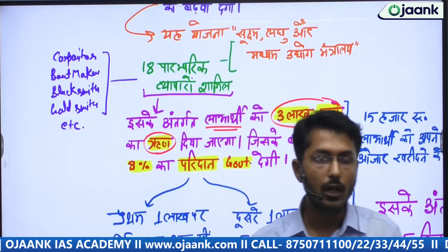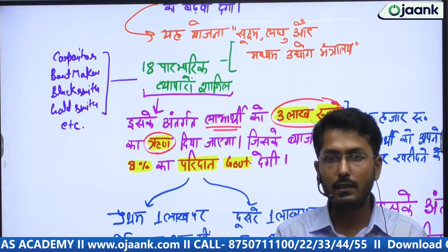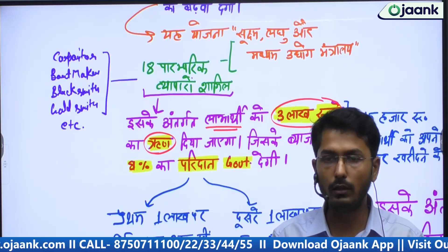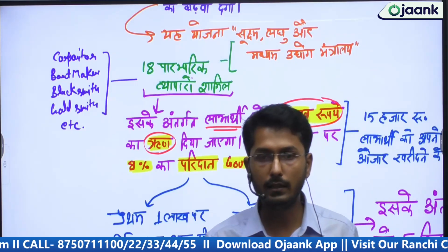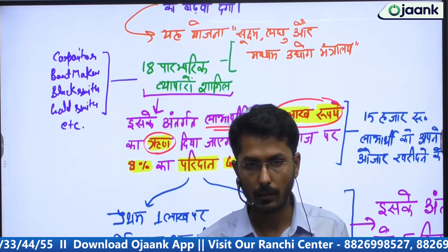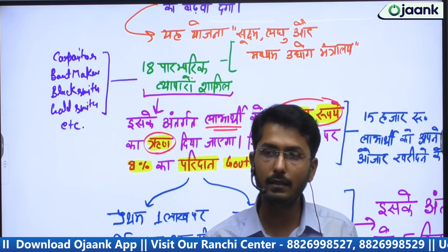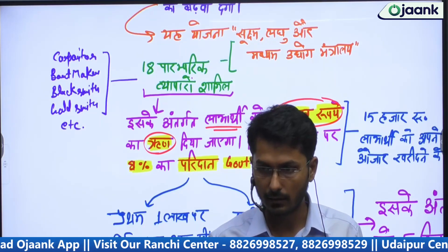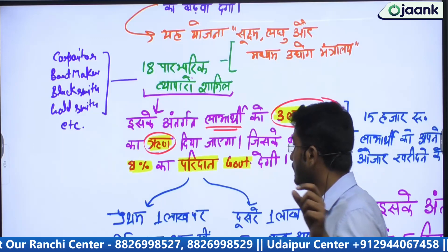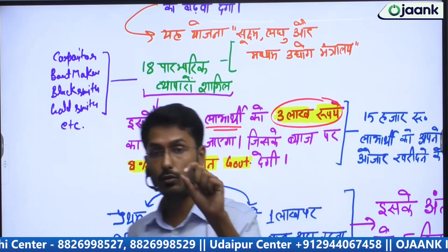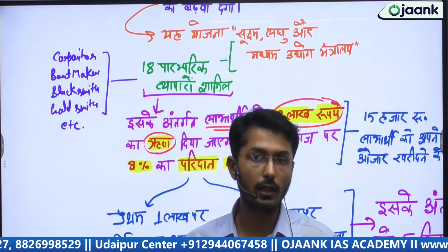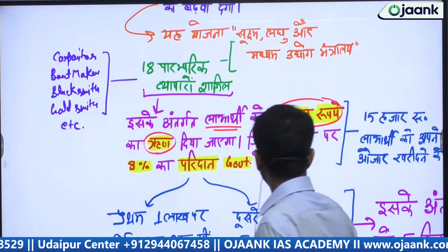A loan will be given, and on this loan, there is a government guarantee. Guarantee — let's understand: when we go to take a loan, we have to provide a guarantee, collateral, proof. Here, the government has given its own guarantee. These are the points you should note down, because when a question is made from a scheme in prelims, these very points are picked up.